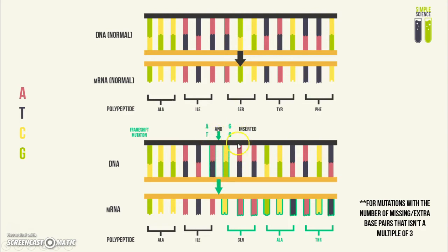In the sense strand, we have two extra bases, which then, when transcribed into an mRNA molecule, it ends up like this. As you can see here, there is a change, and this change only affects the codons downstream.